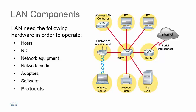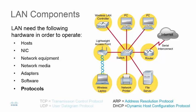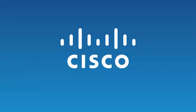Last but not least, protocols. Protocols are sets of rules that govern how data is transmitted over a LAN. The most common protocols used in a local network are IP, TCP, UDP, ARP, and DHCP.